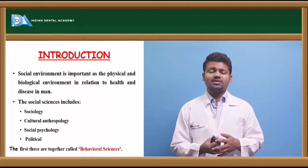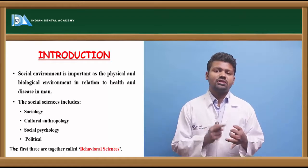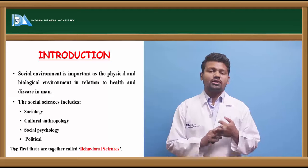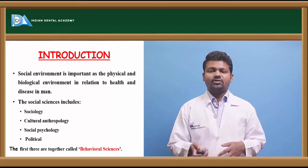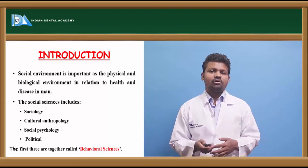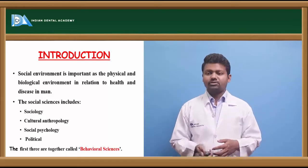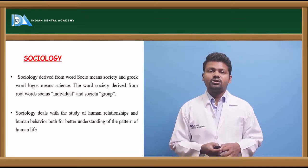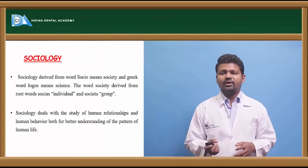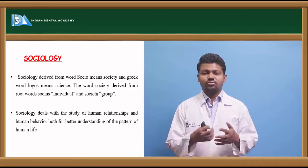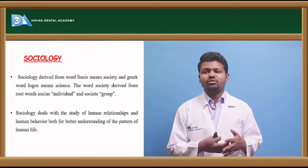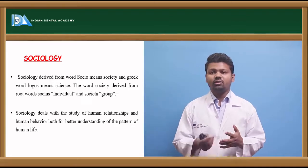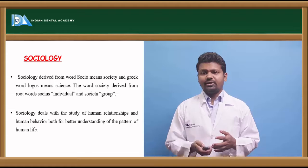The social sciences are of four types: sociology, cultural anthropology, social psychology, and political sciences. The first three together are called behavioral sciences. Coming to sociology, the word is derived from Latin and Greek — 'socius' means society and 'logos' means science, so it is basically the study of society.